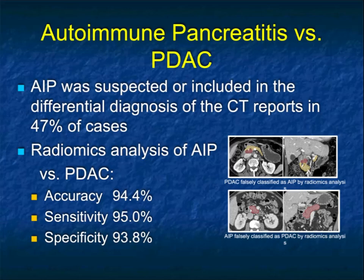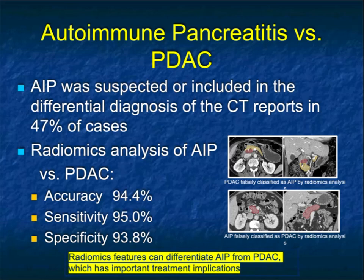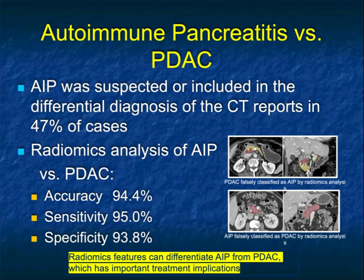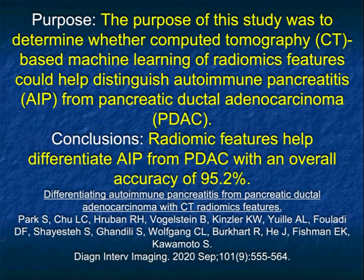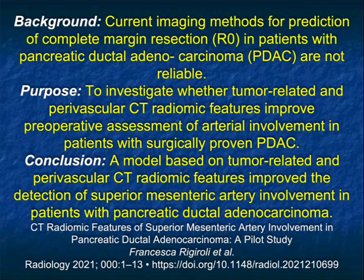AIP was suspected or included in the differential diagnosis of CT reports in only 47% of cases. When we look at radiomic analysis of AIP versus pancreatic cancer, the sensitivity, specificity, and accuracy was around 95% — substantially better than radiologists. That has tremendous potential treatment impact. Imagine looking at every pancreas patient with radiomics: is there a tumor present? In cases with autoimmune pancreatitis, often the radiologist doesn't think of it, the surgeon doesn't think of it, no one thinks of it — but hopefully the computer can. Radiomics features help differentiate autoimmune pancreatitis from pancreatic ductal adenocarcinoma with an accuracy of 95.2%.